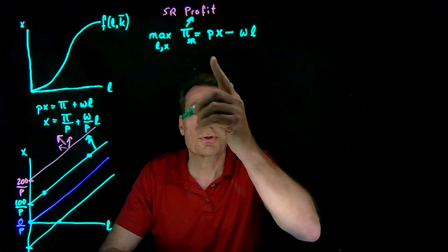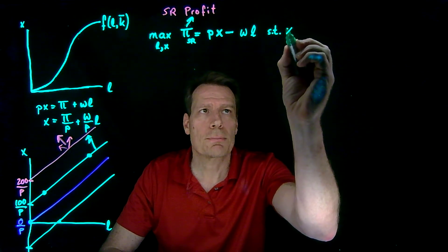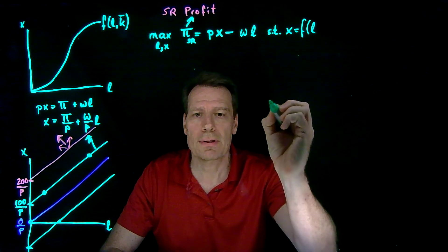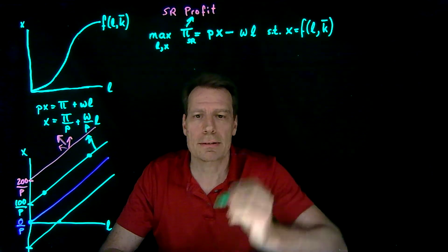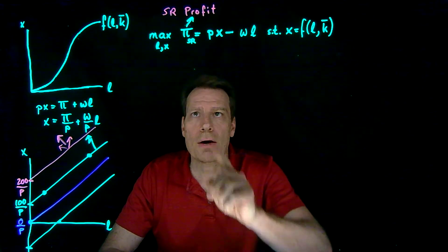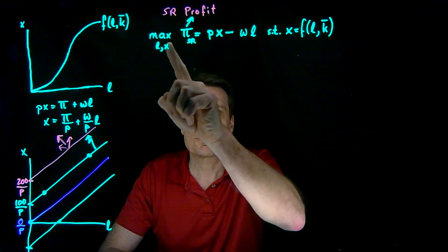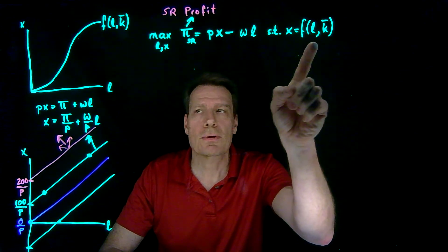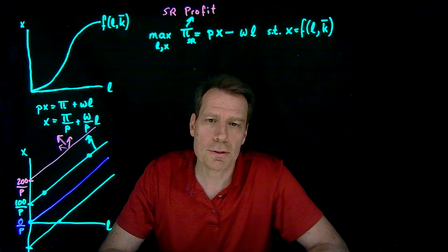But it can't just choose any production plan. It can't choose production plans out here because they're not technologically feasible. So it's going to have to do that subject to the constraint that the output it produces is actually technologically possible, given how much labor it hires and the fixed level of capital it has. So now we have the firm's short-run profit maximization problem: choose a production plan that maximizes profit subject to the technological constraint incorporated in the short-run production function.